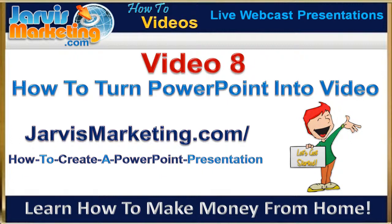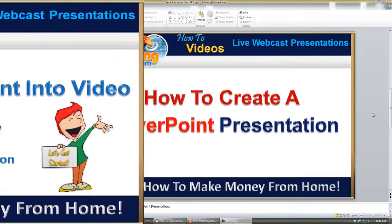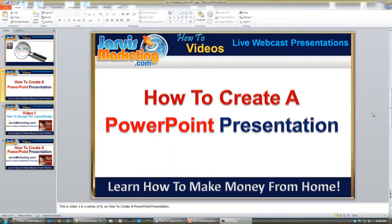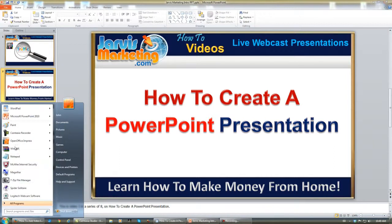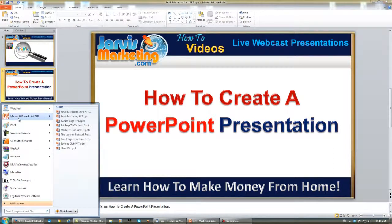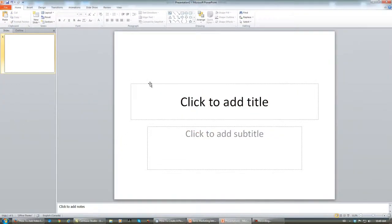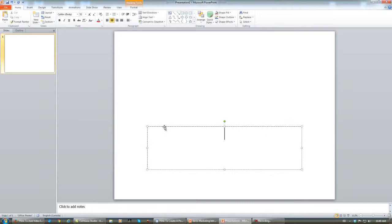So let's get started with this training course on how to create a PowerPoint presentation. The first thing you need to do is go and open up a blank PowerPoint presentation. You can do that usually by finding it right here. Then you left click where it says 'click to add title,' hit your delete key, and do the same thing for the subtitle field. And you start with a blank slate.